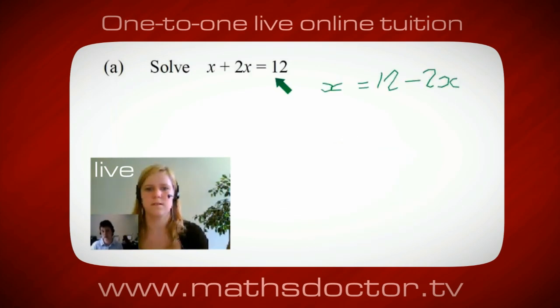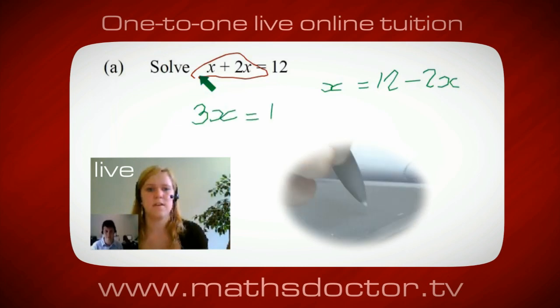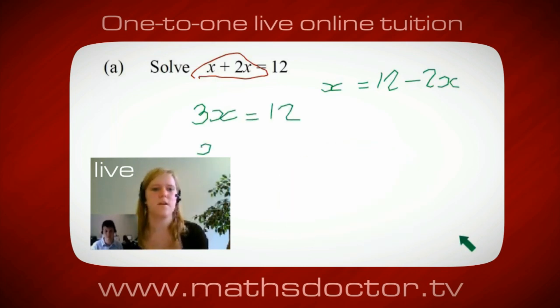OK, so a lot of the time we want to get x by itself, but what we want to do first is get all of these x's together. Can you see anything we can do with this? Get all these together in one place. OK, it's 3x, isn't it? Yeah, absolutely. So 3x equals 12. Oh, and so x equals 4. Brilliant, spot on, well done.